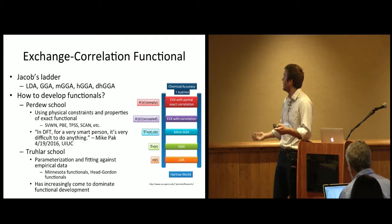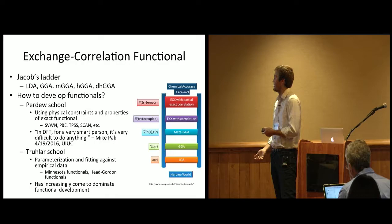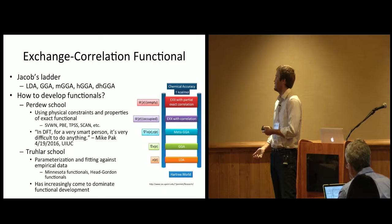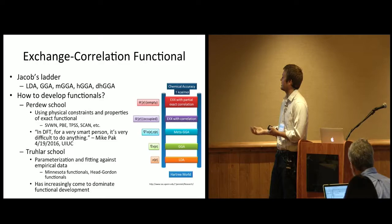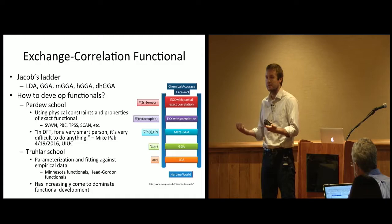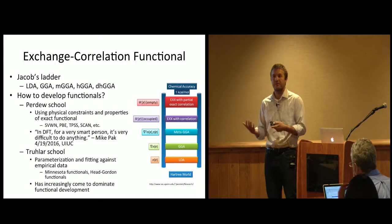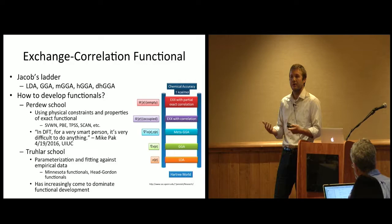At the bottom rung, we have this thing called LDA, or local density approximation, which just depends on the density. And then as we ascend the rungs, we add extra input variables. On the second rung for GGA, or generalized gradient approximation, we add gradient information. On the third rung for meta-GGAs, we add the Laplacian of the density or kinetic energy density. On the fourth and fifth rungs, we add information about the occupied or virtual orbitals, respectively. So typically, functionals get more accurate as you go up these rungs because they contain extra information. They also become more complex, and they also normally computationally take more time as you ascend this ladder.